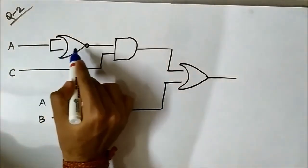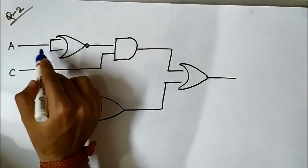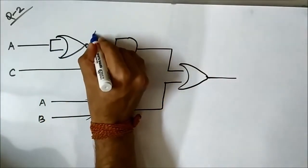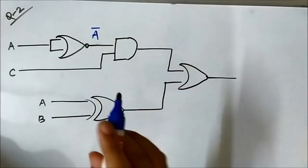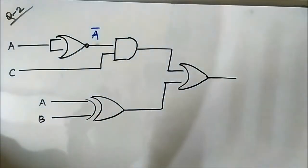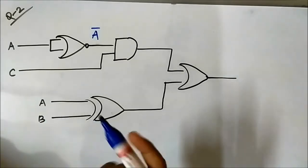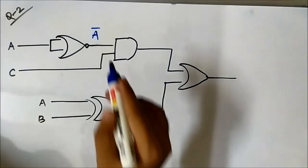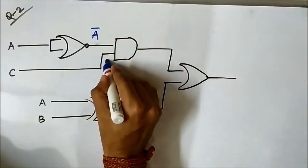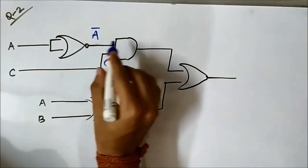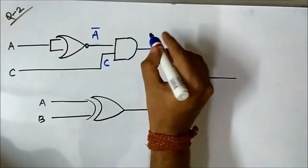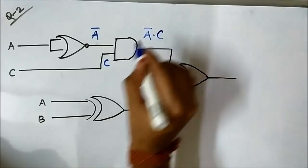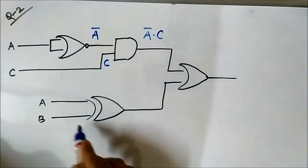The NOR gate has signal A connected to both its inputs. Since A OR A equals A, and it is a NOR gate, the output is A complement, or A-bar. The third input is C. So the two inputs to the AND gate are A complement and C, giving an output of A-complement · C.